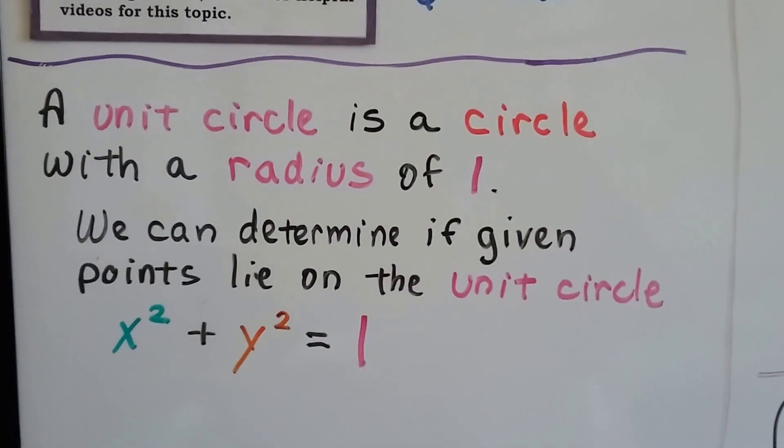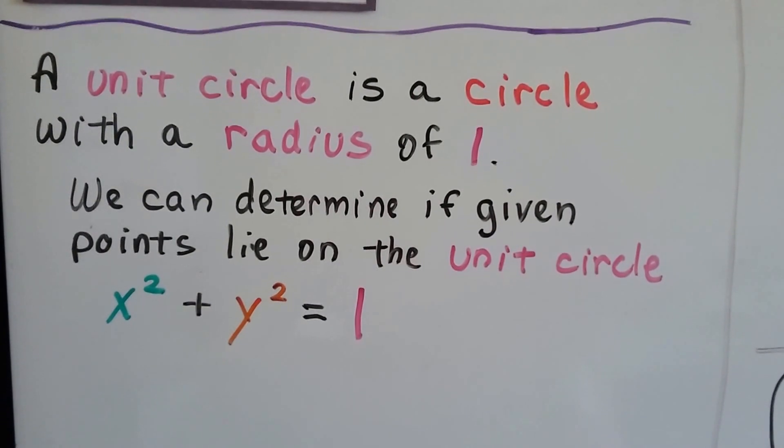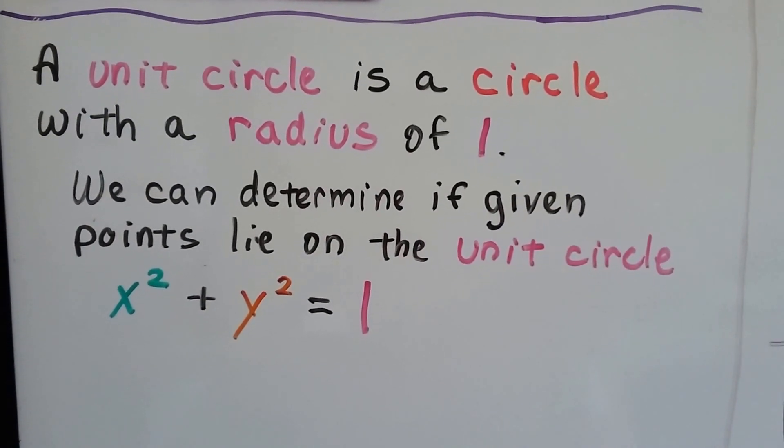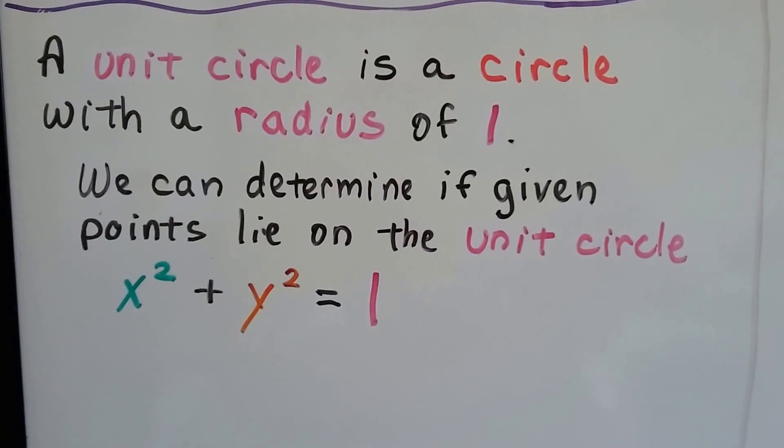A unit circle is a circle with a radius of 1. It's got 1 unit. And we can determine if points lie on the unit circle. We can use this equation: x squared plus y squared equals 1.